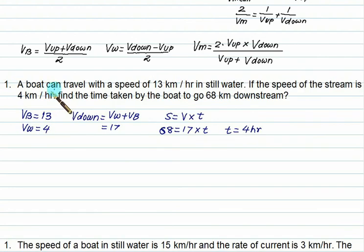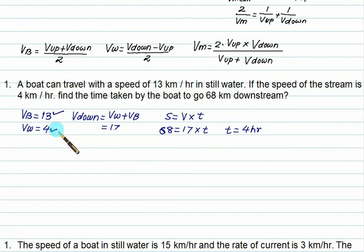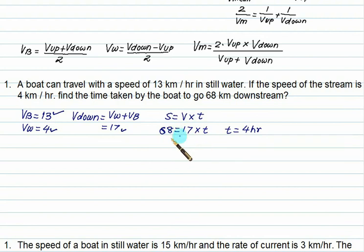A boat can travel at a speed of 13 km/h in still water. Speed of the stream is 4. So velocity of downstream equals 13 plus 4 equals 17 km/h. Distance S equals V times T, so 68 equals 17 times T, giving T equals 4 hours.